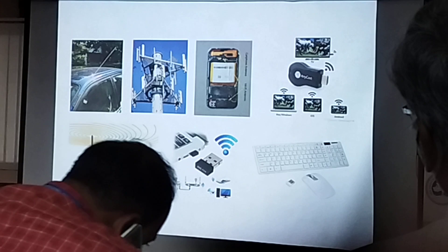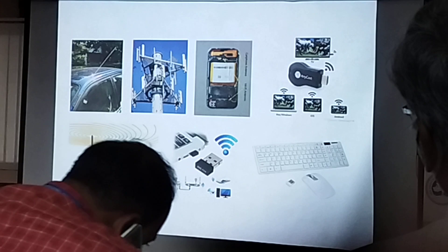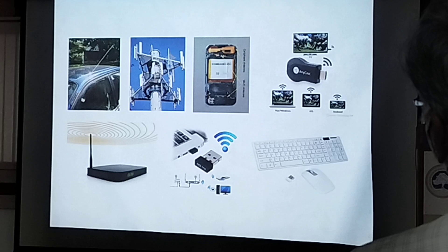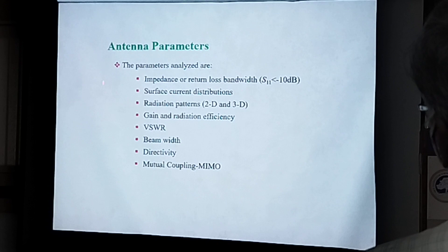In olden days you would have seen whip antennas — these are all monopole antennas which are installed on a car. Now slowly, cars are coming with a small, tiny blade-type antenna. These are all the main parameters for any antenna design engineer to consider.